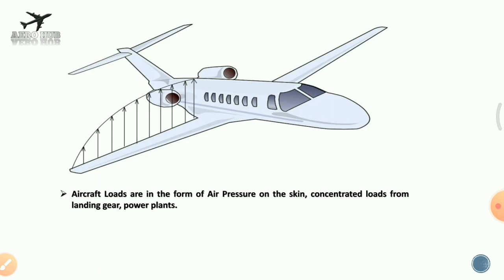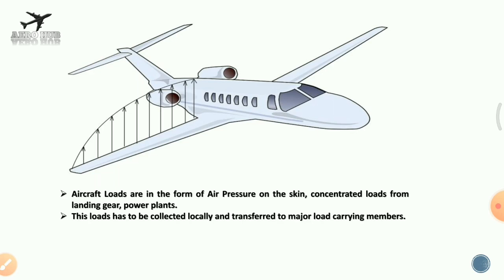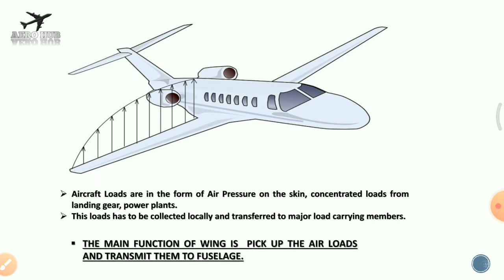These loads are collected locally and transferred to the major load-carrying members of the wing and other components of the aircraft. The main function of the wing is to pick up the air loads and transmit them to the fuselage, which is a more robust structure capable of carrying a greater amount of load.